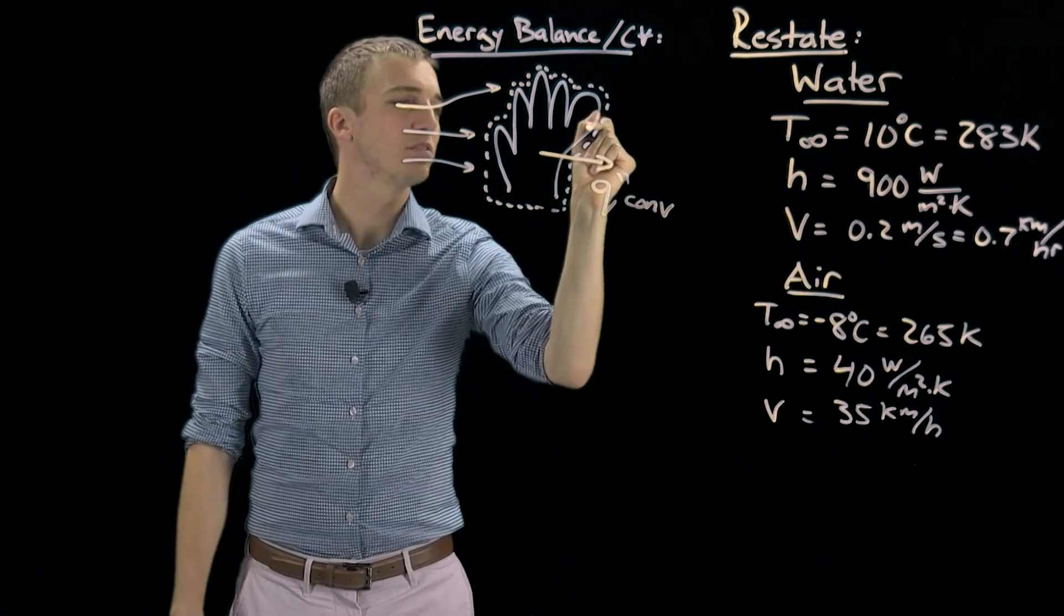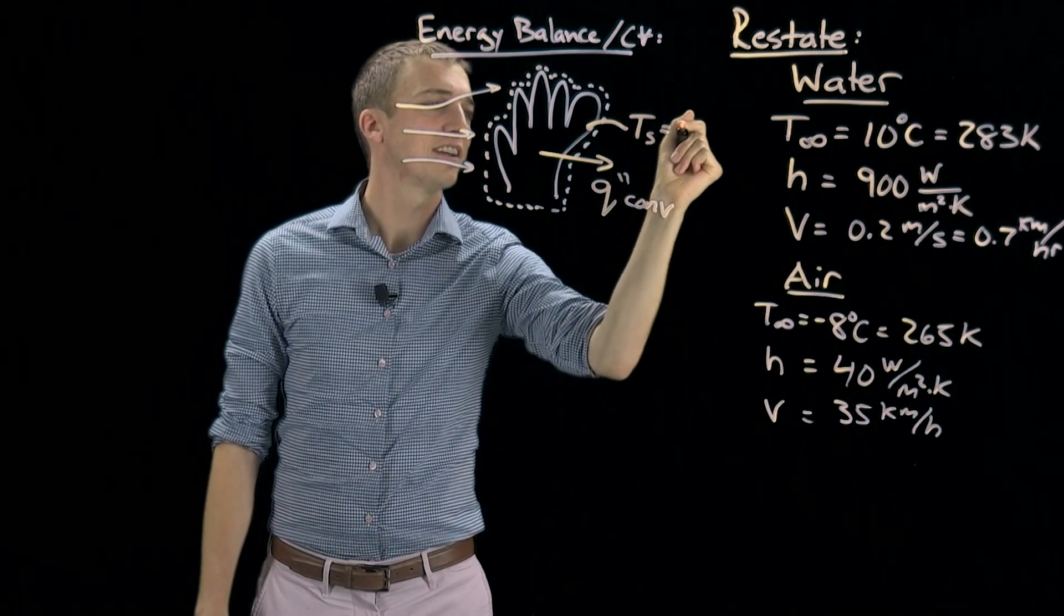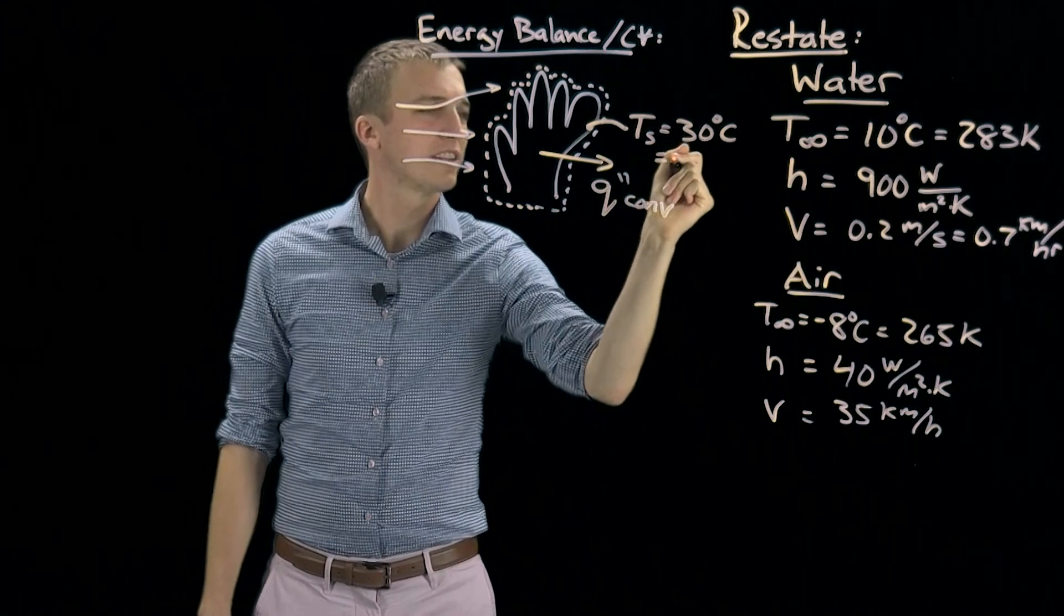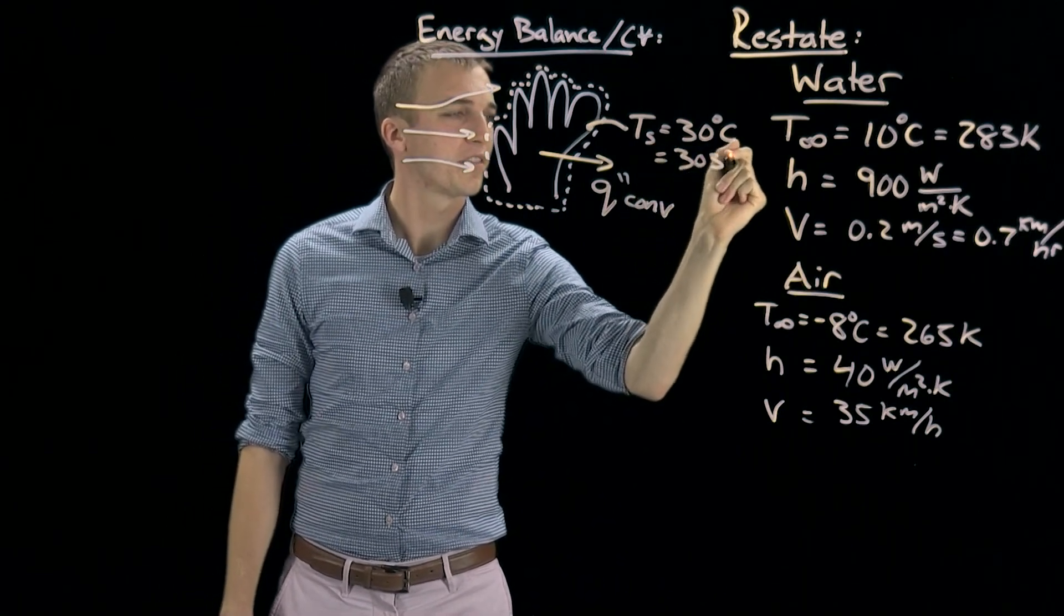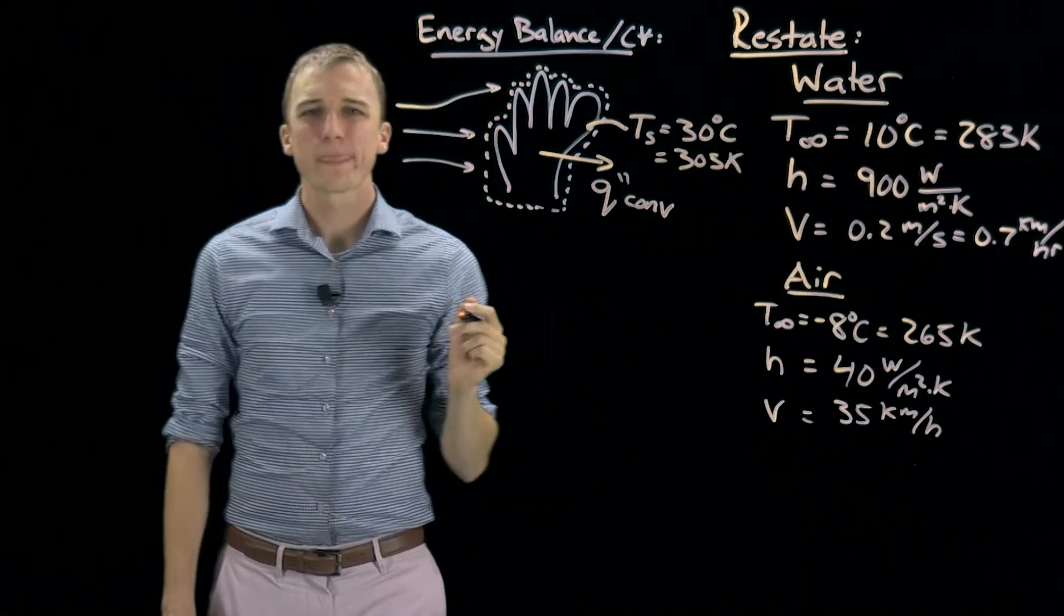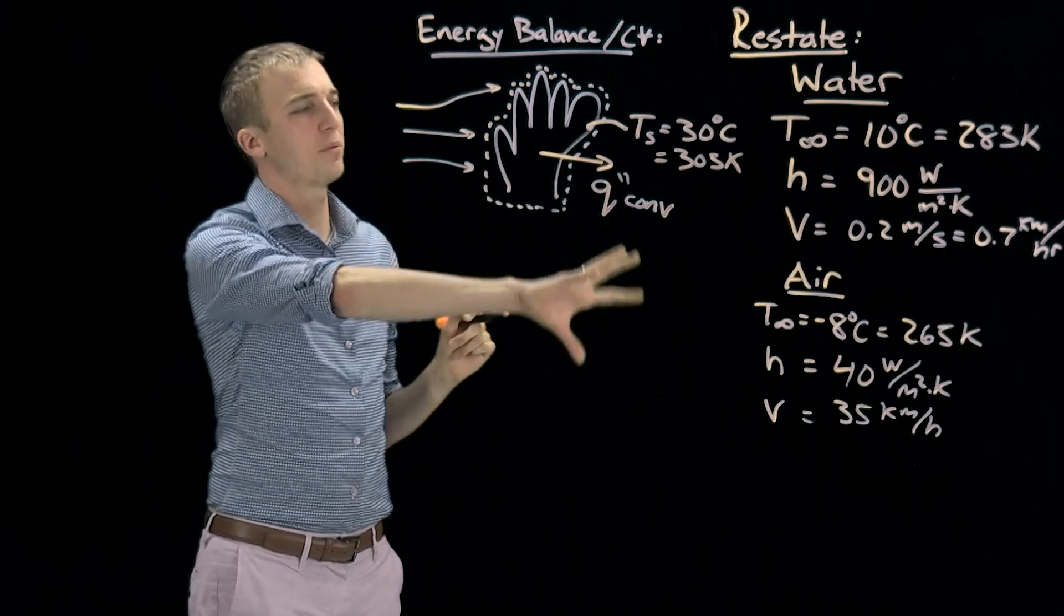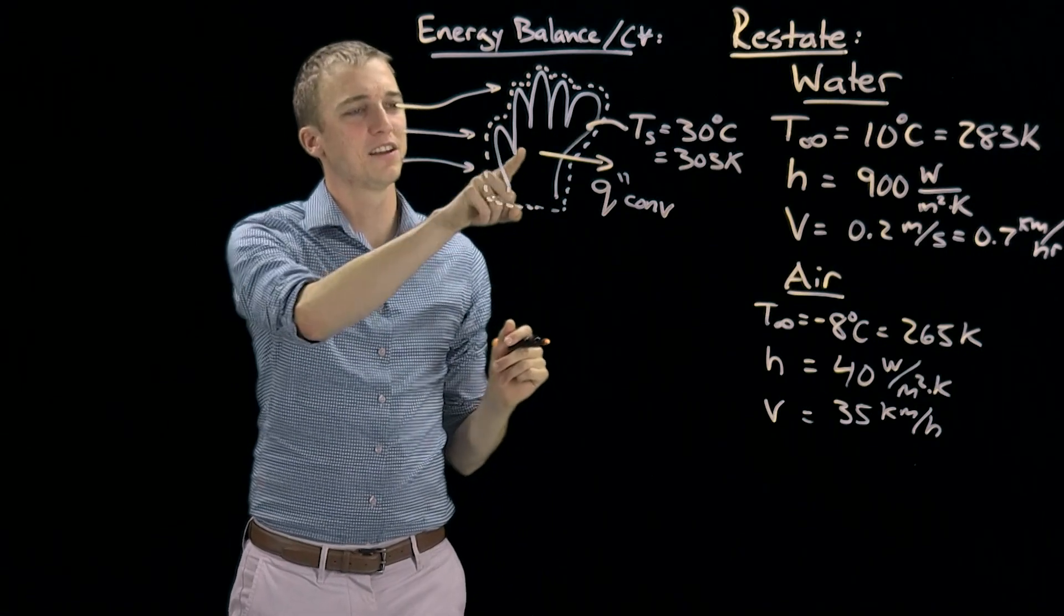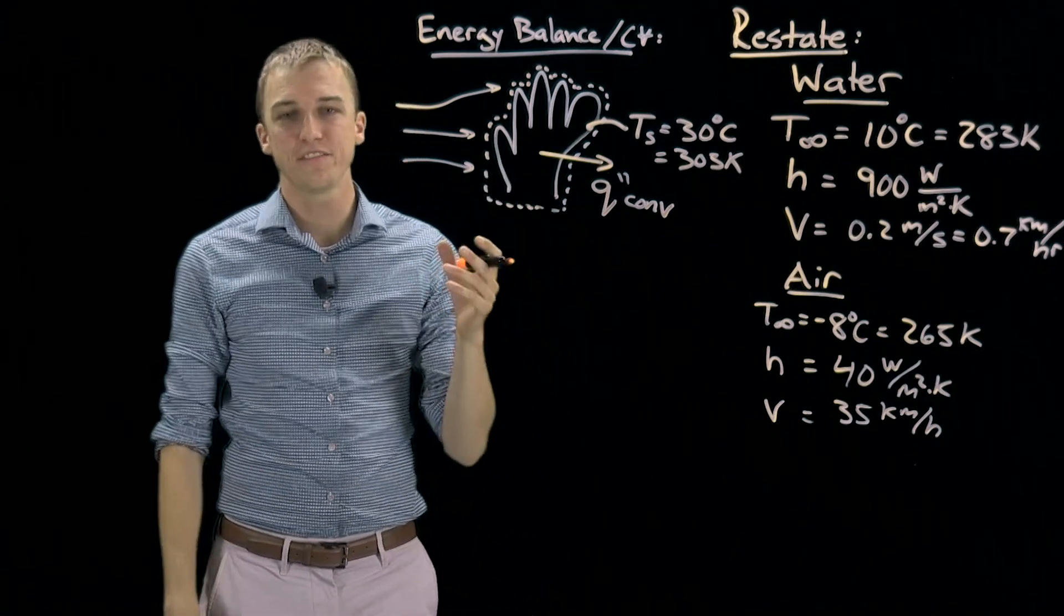Finally, we do know that the surface of our hand is at 30 degrees Celsius, which translating is 303 kelvin. So we've restated our problem and we've drawn our energy balance on a control volume, specifically a hand with some heat leaving as convection.